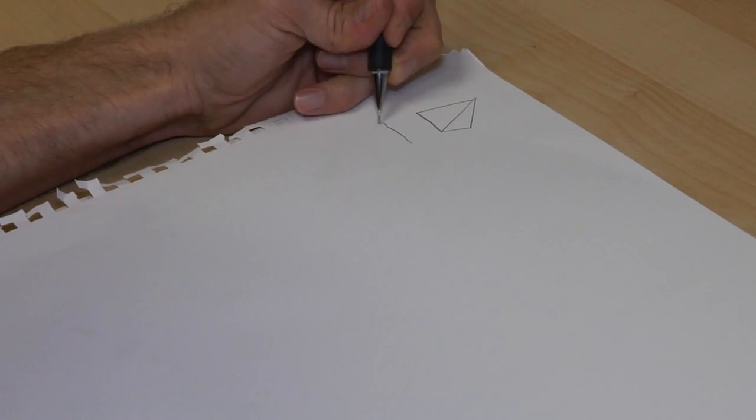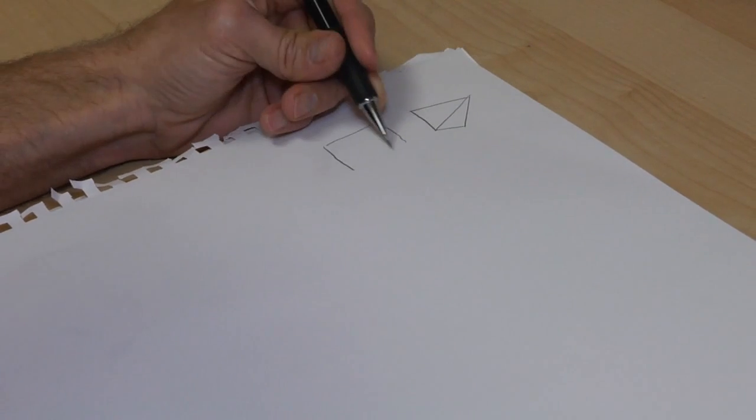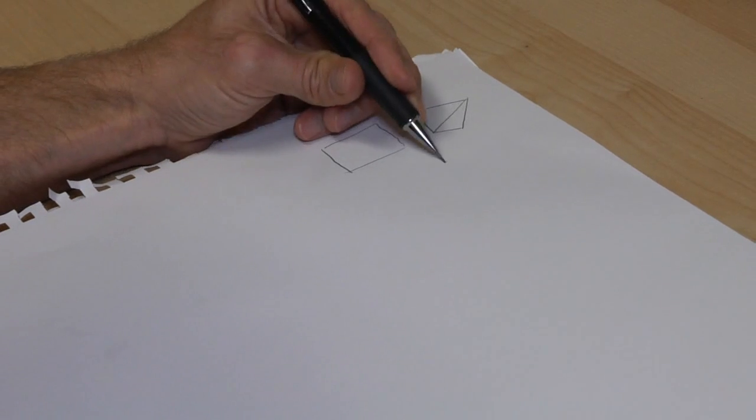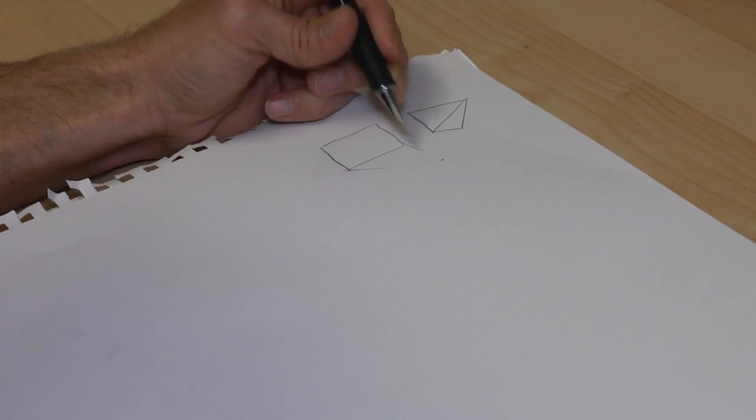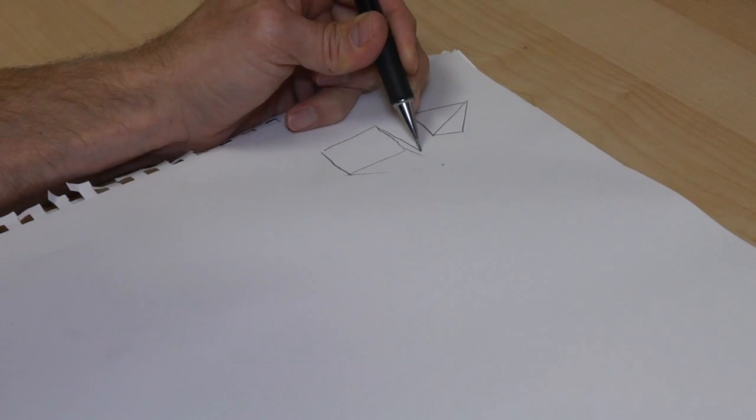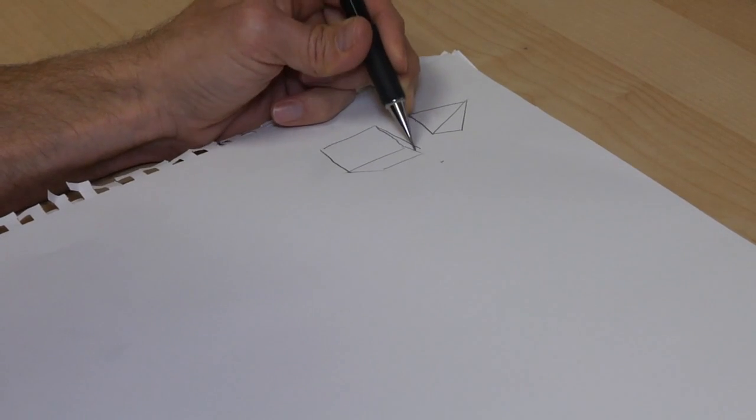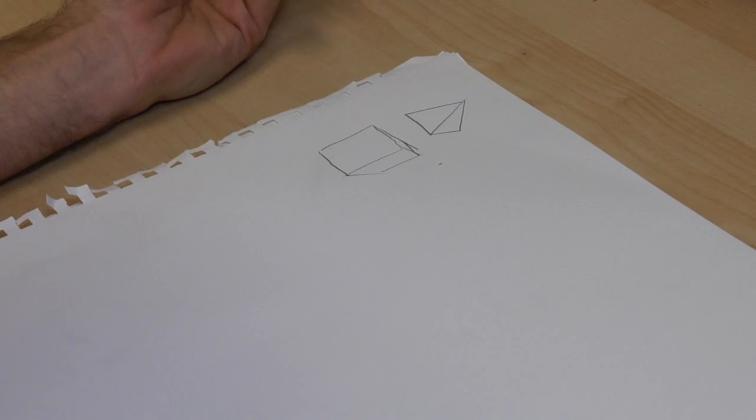Or maybe we would draw a square, a simple shape with a square, and again, pick a one-point perspective, bring it back to this point that we have, bring all the lines to the point, and then cut it off. And that would give us our square.